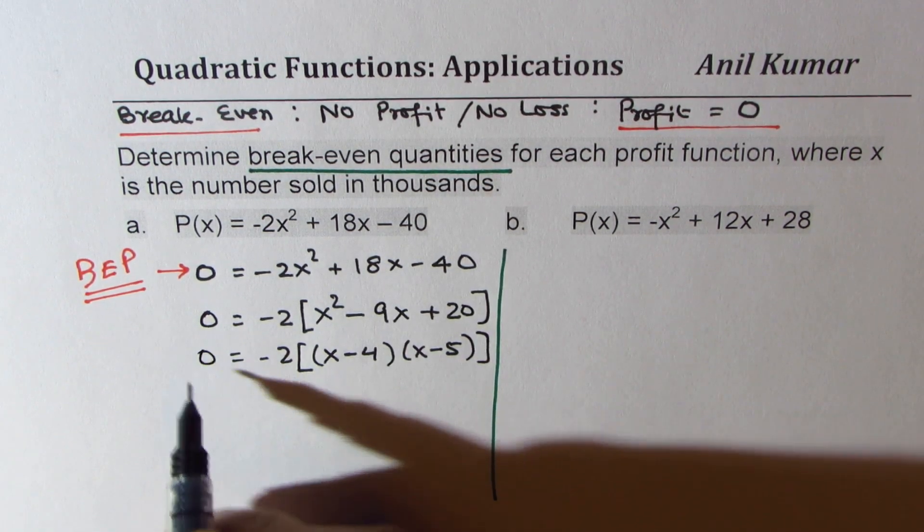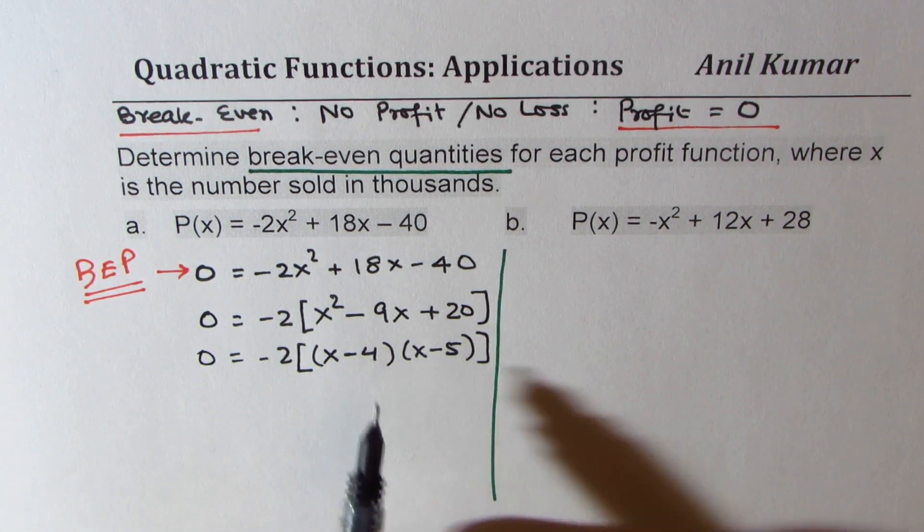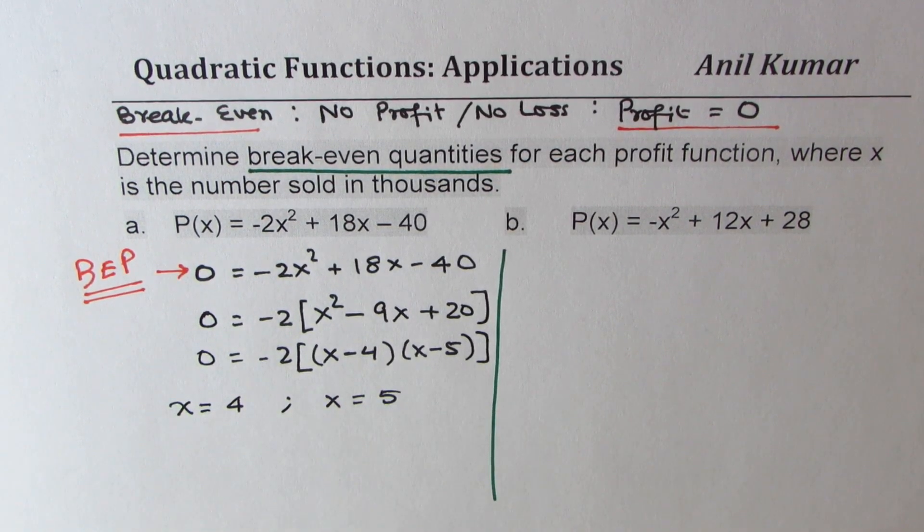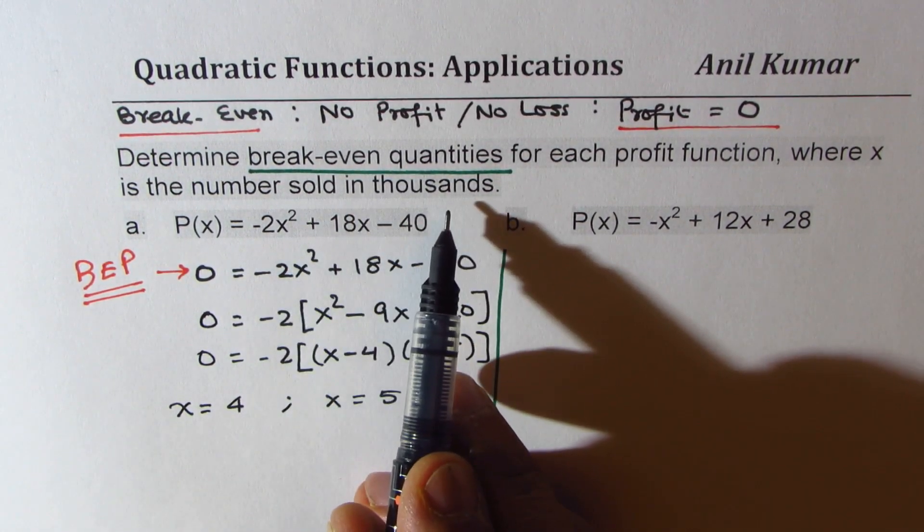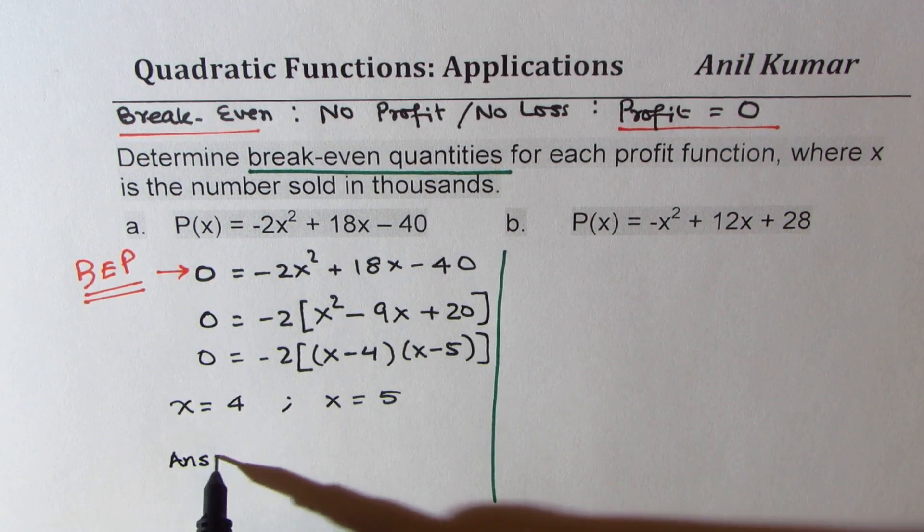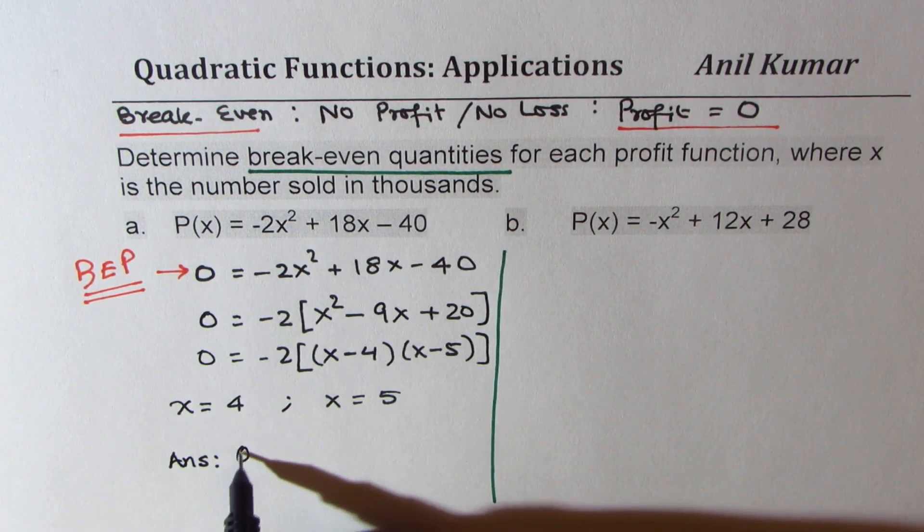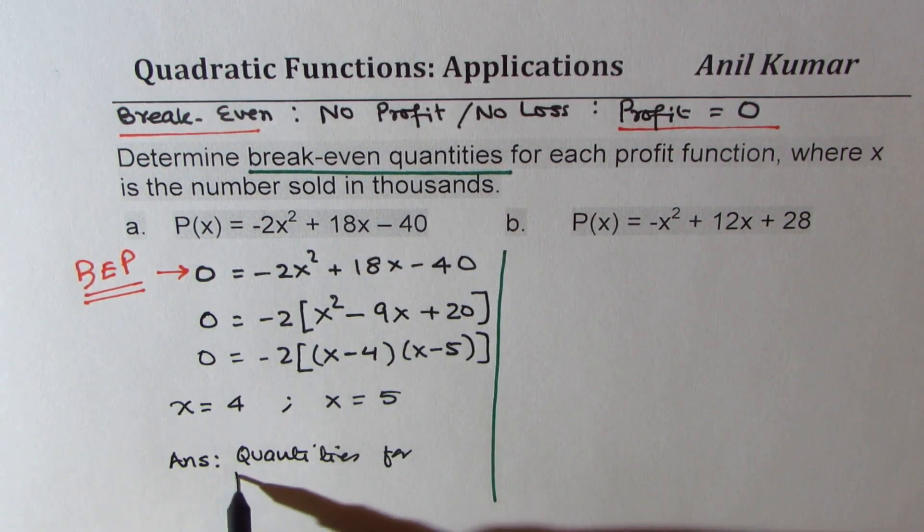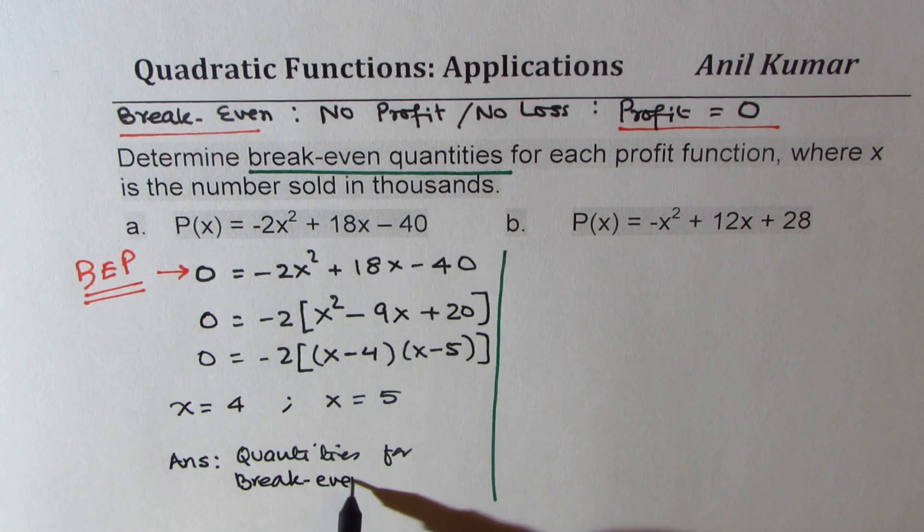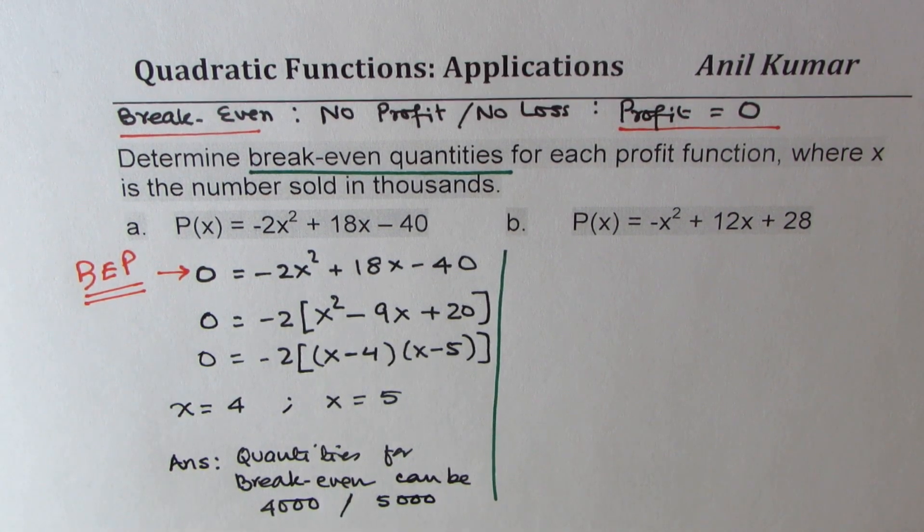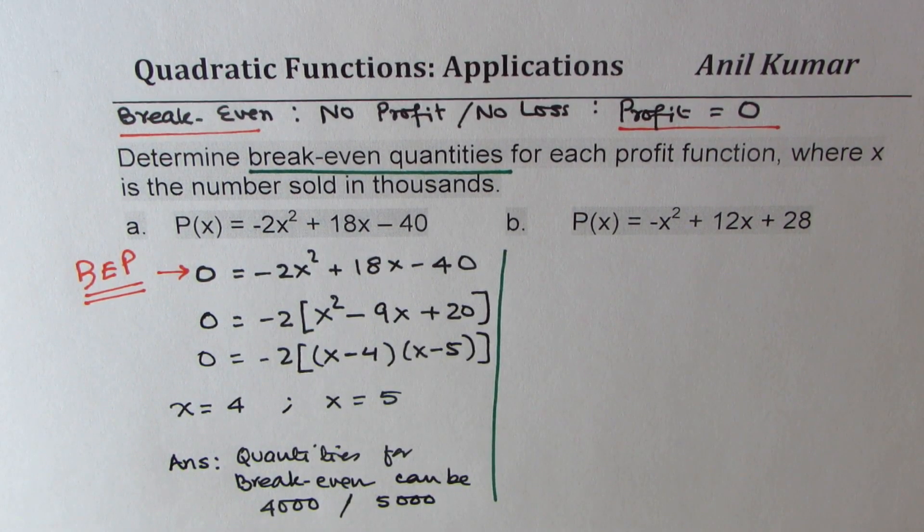So this function has break-even points for x equals 4 or x equals 5. Since the units are in thousands, the break-even quantities will be in thousands. So therefore our answer here is that the quantities for break-even can be 4000 numbers and 5000 numbers.